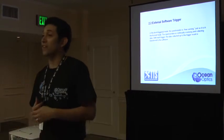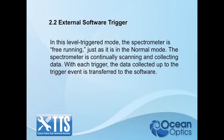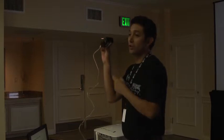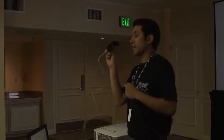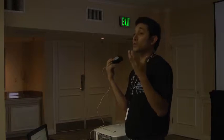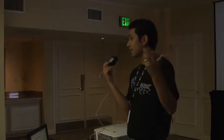The next trigger mode is called external software trigger. It's a little bit confusing because it seems like you are triggering the spectrometer with software, but that's not what's happening. You actually need to provide a five-volt TTL signal into your spectrometer. For example, the USB 4000 has 22 pins, the HR 4000 family has 32, and the old USB 2000 had 10 — but one of those pins is your external trigger input.